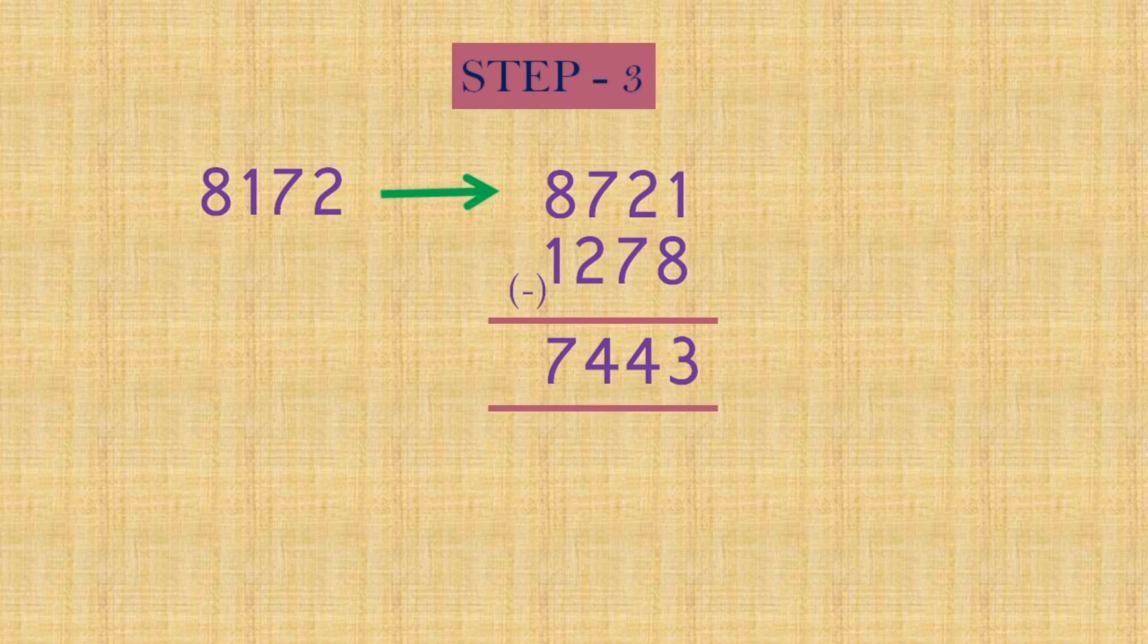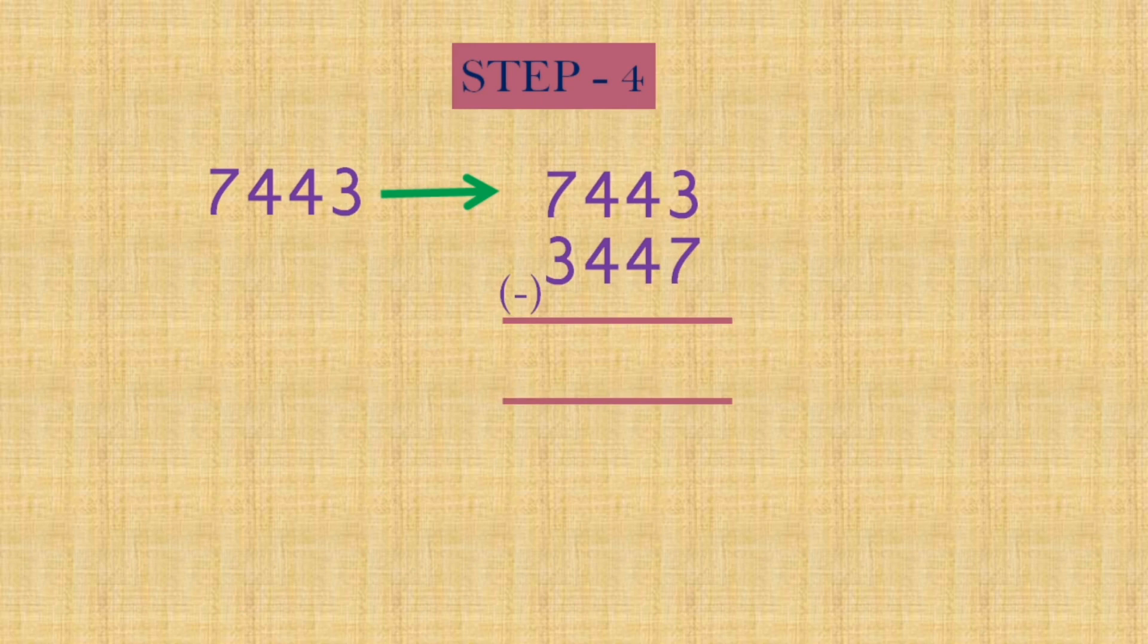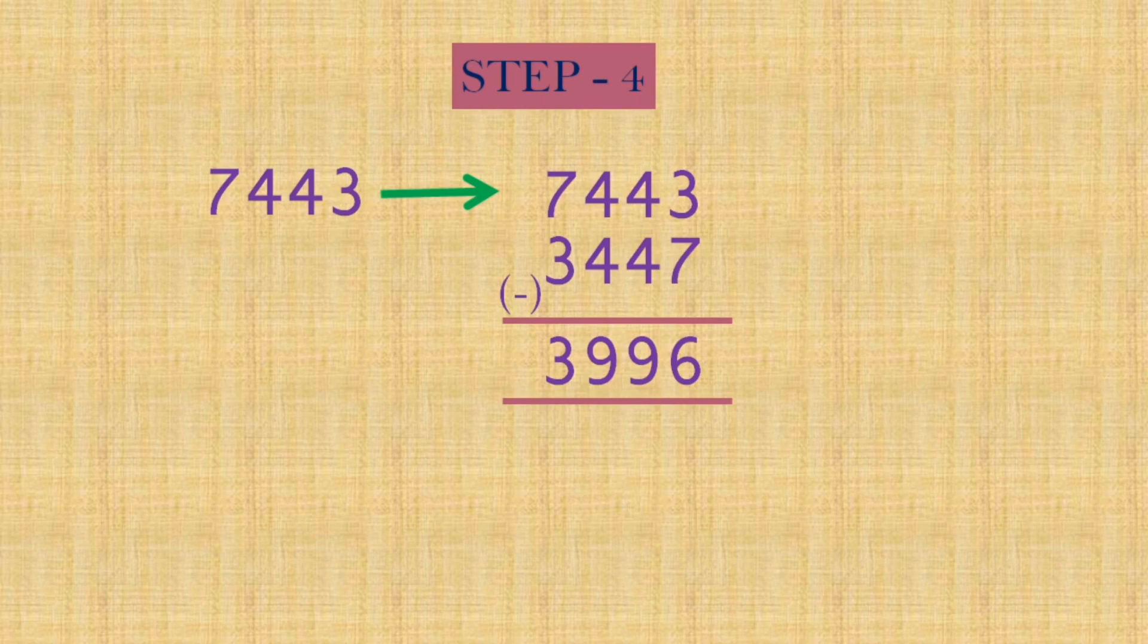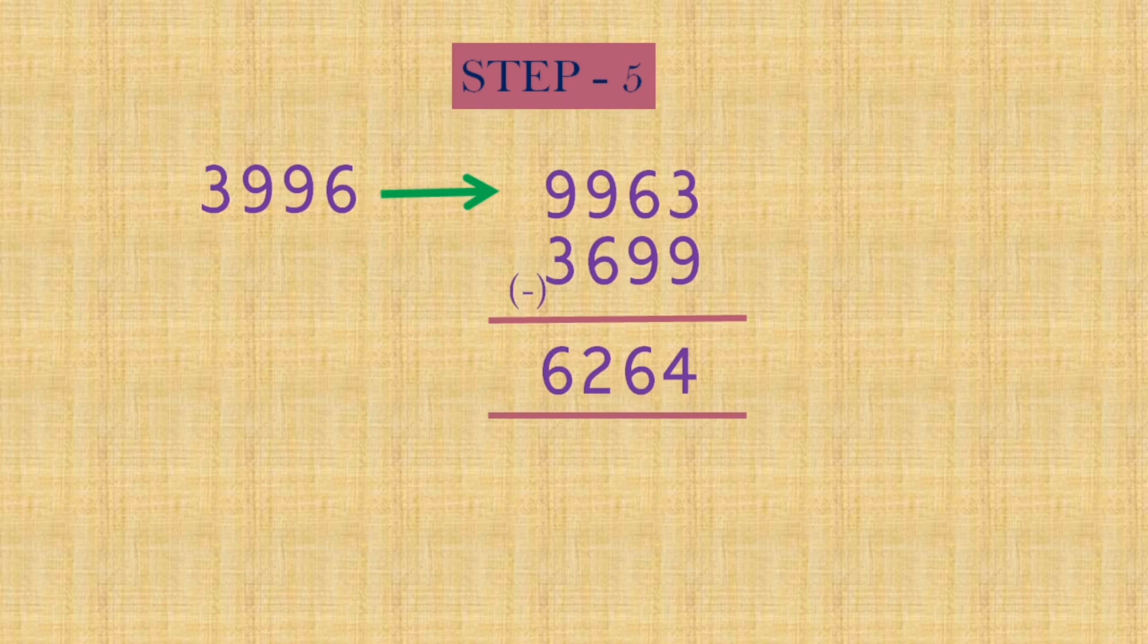Again, continue the same process. 7443, already it is the biggest possible number. Smallest number 3247. Again we subtract, 3996. Again the same process. 3996, biggest possible number 9963, and smallest possible number 3699. Subtract, 6264.